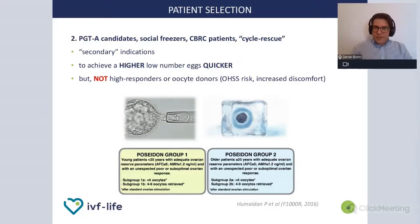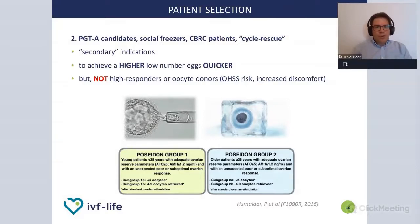A second group of suitable patients — secondary indications — are patients who want to do pre-implantation genetic screening. Often these patients have advanced maternal age and the same problem of low ovarian reserve, so they would not produce a high amount of eggs. Also, older social egg freezers in their late 30s or even 40s — not the ideal age for egg freezing, but we have such requests. Additionally, cross-border reproductive care patients in our clinic could benefit from back-to-back cycles for logistical reasons, performing a stimulation within a one-month period.